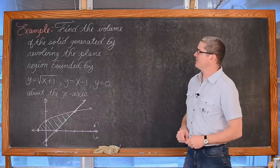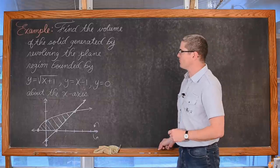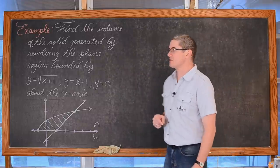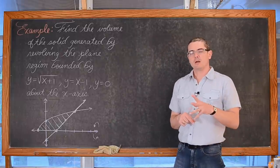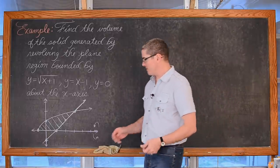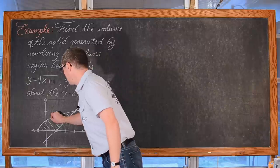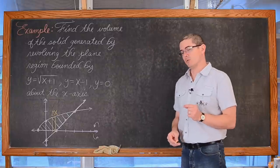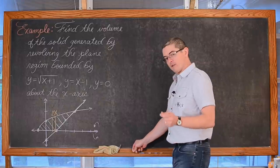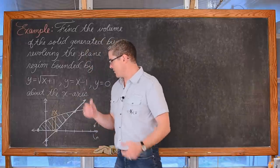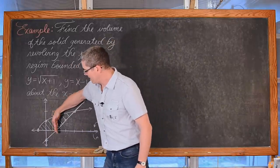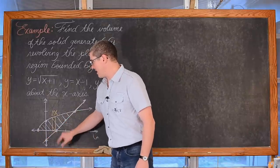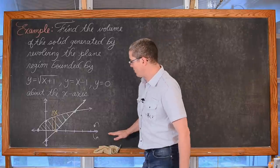It is the last example: Find the volume of the solid generated by revolving the plane region bounded by y = √(x + 1), y = x − 1, and y = 0, about the x-axis. Now if we wanted to do the disk method for this problem, since we have a horizontal axis of rotation we would need vertical representative rectangles, which means we would be integrating with respect to x.